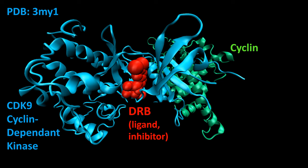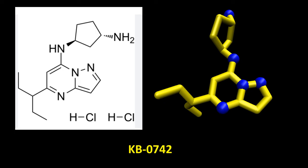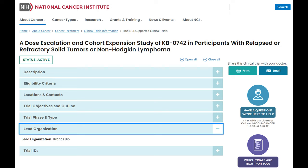In brief, cyclin-dependent kinases are positive regulators of cell cycle progression. Inhibition of cyclin-dependent kinase 9, CDK9, for example, can impact multiple survival pathways in cancers. One such example is KB0742, a potent and selective CDK9 inhibitor. The development of inhibitors that target CDK9 may offer a promising therapeutic approach for the treatment of a variety of cancers.